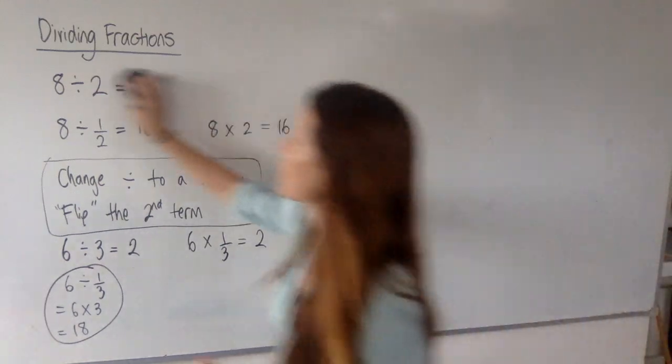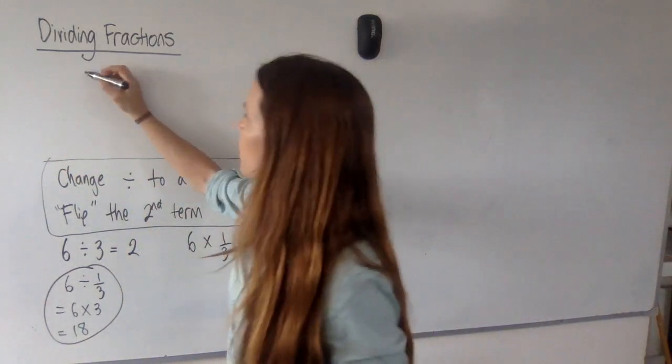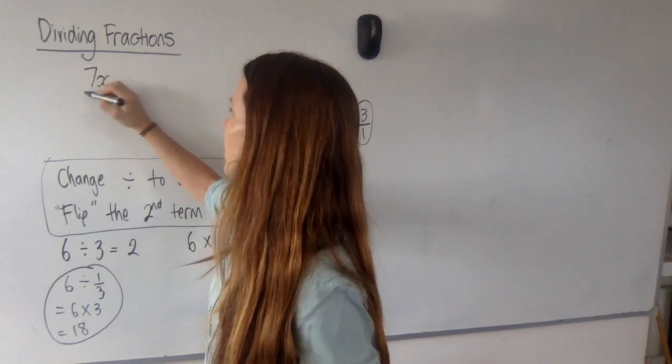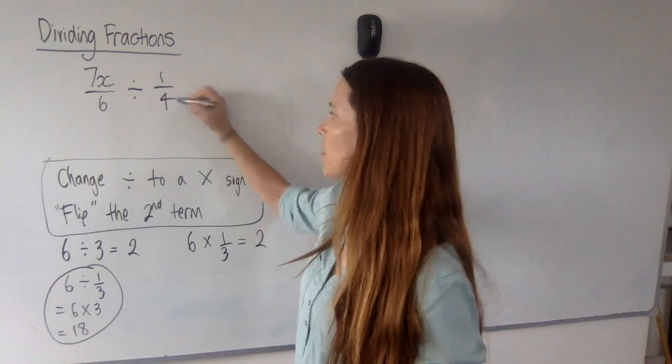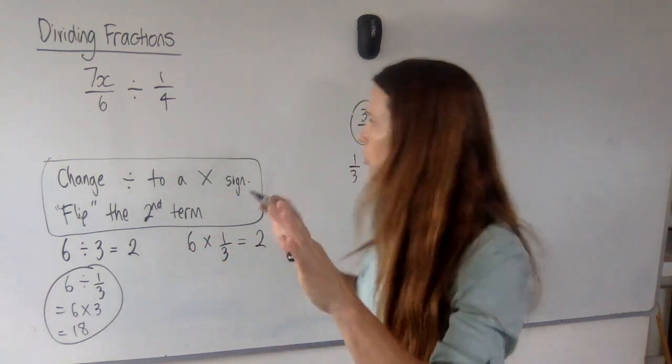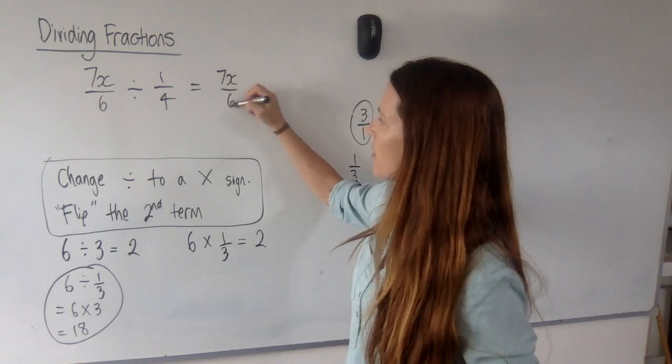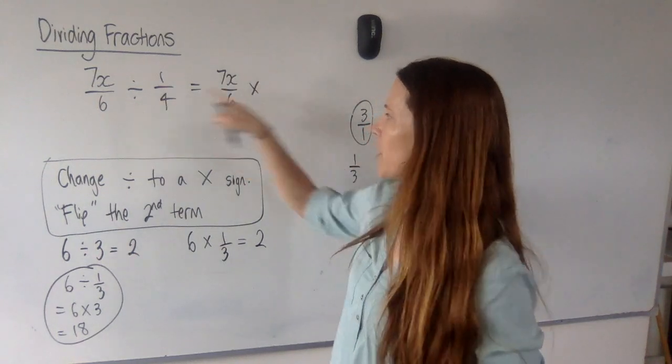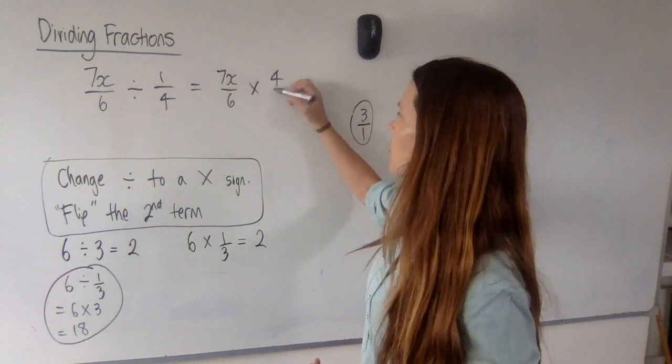So is this going to work just the same with algebraic fractions? Absolutely. So if we have something like 7x over 6 divided by a quarter, looks hard, not that hard now. We've got a workaround. We're going to do 7x over 6 times, we've changed the division to a times, and then we're going to flip this fraction. So it's going to be 4 over 1.